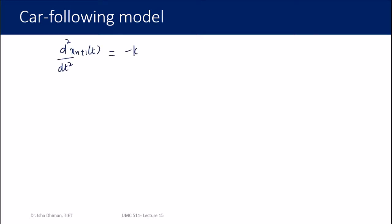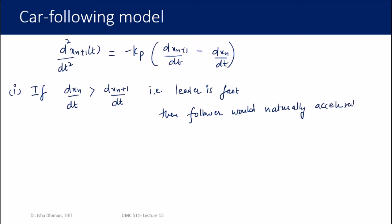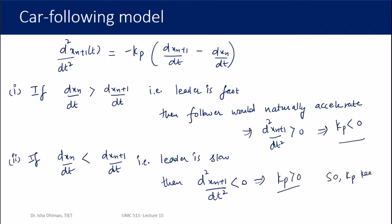Analyzing this model: if dx_n/dt > dx_{n+1}/dt, the leading vehicle is driving faster than the follower, so the follower will naturally accelerate. If dx_n/dt < dx_{n+1}/dt, the leader is slower and the follower must decelerate. So k_p keeps changing with respect to time — it is a function of time and can have different values at different instances.